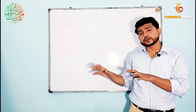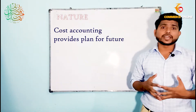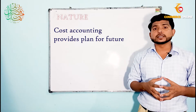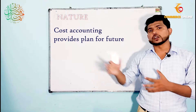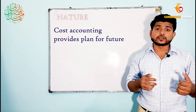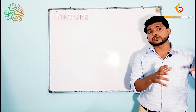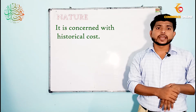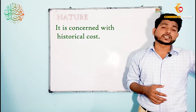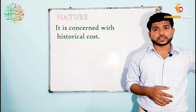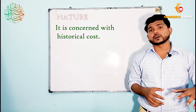Cost accounting does not end with what has happened in the past — it extends to plans and policies to improve performance in the future. So its main concern is planning for the future. But when you talk about financial accounting, it is concerned with historical records, such as what assets a business purchased in the past and what impact those assets have on the future of the business.